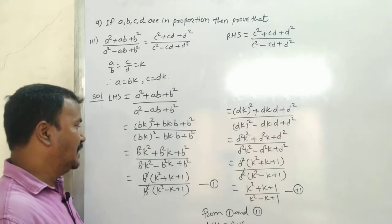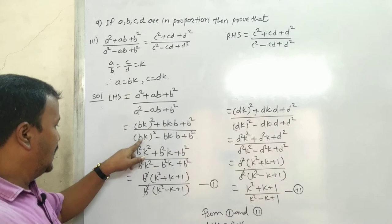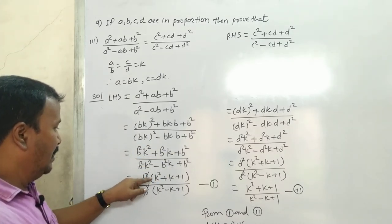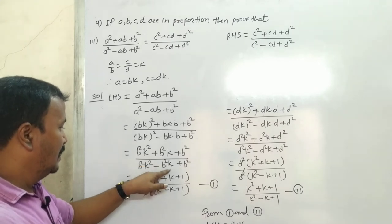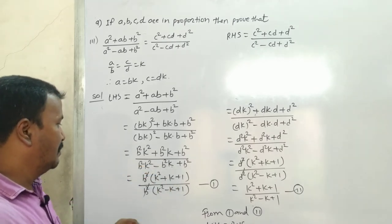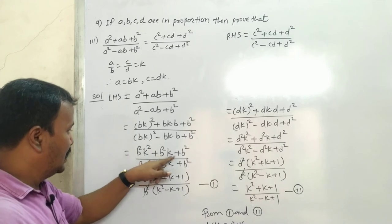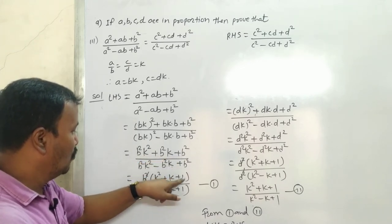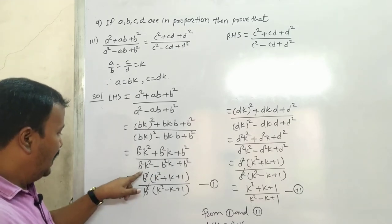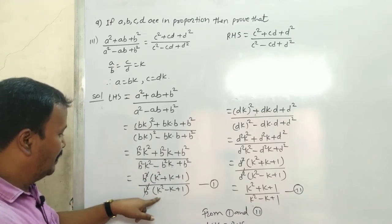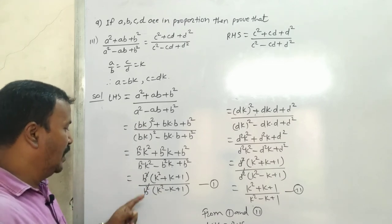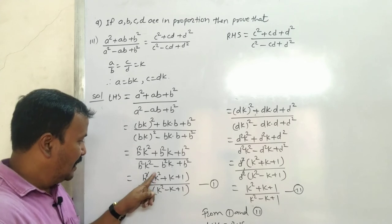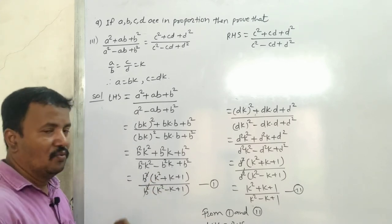This gives (b²k² + b²k + b²) / (b²k² - b²k + b²). Taking b² common in numerator and denominator: b²(k² + k + 1) / b²(k² - k + 1). The b² cancels, leaving (k² + k + 1) / (k² - k + 1).